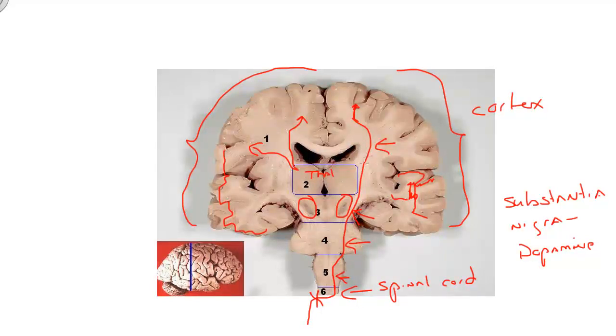Many of those tracts extend for great distances, very long distances. Whereas the nuclei, these guys like the substantia nigra, are really well confined. No more than a centimeter in any one dimension.